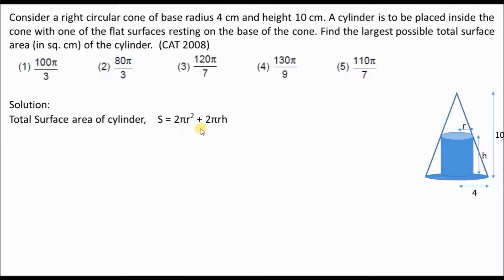Now I have the surface area expression. I will differentiate it with respect to r or h, equate the result to 0, and that will give me the value of r or h. Accordingly I can derive the maximum surface area. This is how we solve maximum or minimum problems — differentiate, equate to 0, and plug the value back.